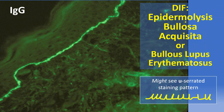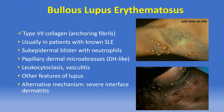DIF testing for EBA typically reveals continuous linear IgG along the dermal-epidermal junction, and one might appreciate a U-serrated staining pattern typical of sub-lamina densa immunobullous disorders affecting type 7 collagen. The other disorder showing this same pattern is bullous lupus erythematosus — like EBA, mediated by autoantibodies directed against type 7 collagen anchoring fibrils, usually in patients with a known history of SLE. The histopathology is similar to linear IgA disease with subepidermal blisters with neutrophils and sometimes dermatitis herpetiformis-like papillary micro-abscesses. Remember there is a second mechanism by which blisters can form in lupus — as a very severe interface dermatitis.